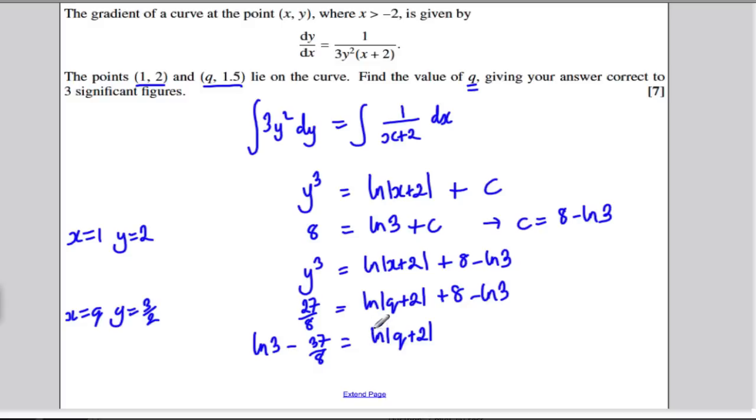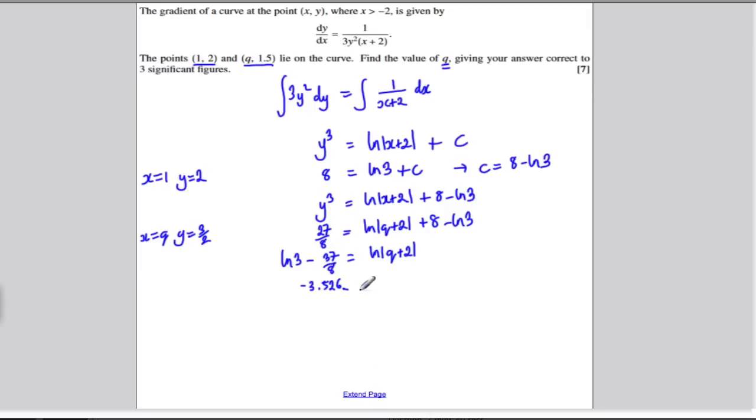You get minus 3.52. Keep that in your calculator. Minus 3.526, don't round it at this stage. That's equal to ln q plus 2. So, to find q, take exponentials of both sides. So, e to the minus 3.526, fully in your calculator, must equal q plus 2.